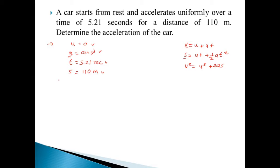So we can use the second equation: s = ut + 1/2 at². We substitute the values: 110 = 0 + 1/2 × a × (5.21)². Acceleration we have to find out, and time is 5.21. So we can easily find out this acceleration by solving this in a calculator.